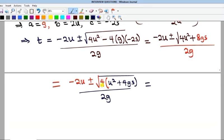Which if I do, I'm going to have minus 2u plus or minus. If I take the square root of 4, I will get 2. So the square root will now only contain u squared plus 4gs.